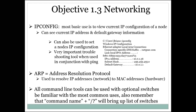ARP resolves IP addresses to MAC addresses, and that's how routers and switches know where to send things. ARP is very useful in helping troubleshoot those issues. All these command line tools can be used with optional switches, and you should be familiar with the most common options. You can type something like ipconfig /? and that will bring up a list of the command line switch modifiers. There are some pretty interesting things you can do and ways to change how the command line tools operate.